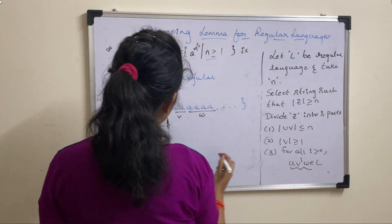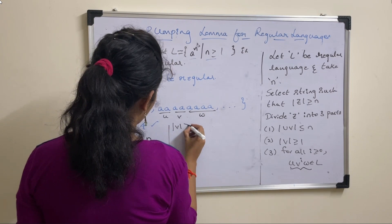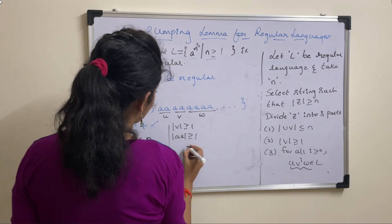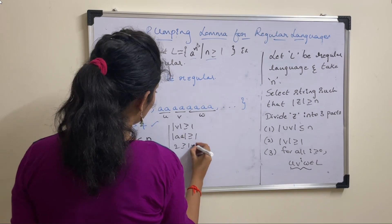Now check mod v greater than or equal to 1. Mod v means a a. So 2 greater than or equal to 1, condition true.